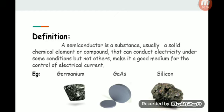Definition: A semiconductor is a substance, usually a solid chemical element or compound, that can conduct electricity under some conditions but not others, making it a good medium for the control of electrical current. Examples include germanium, GaAs, and silicon.